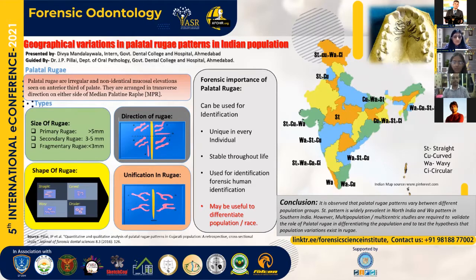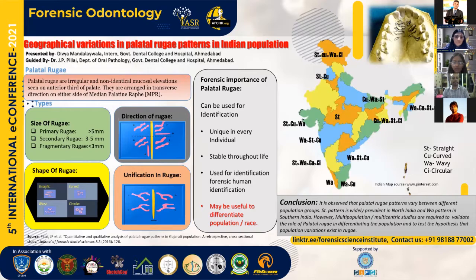Data has been collected from several research articles published in standardized journals and compiled for this poster. These patterns varied significantly in major population groups. In the north, a straight pattern was more commonly seen, whereas in the south, wavy would predominate. This has been inferred from an article published by Sankar and Samugam et al comparing populations of northern and southern India. Among the states of the western coast, there are notable differences in Gujarat, Maharashtra, and Karnataka, whereas towards the central part of India, straight patterns dominated.